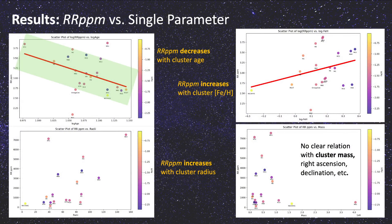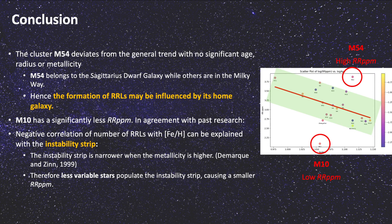Results show that RR PPM decreases with cluster age and increases with metallicity and radius. It is concluded that the formation of these variable stars may be related to their home galaxy. Moreover, the width of the instability strip can be an influencing factor.